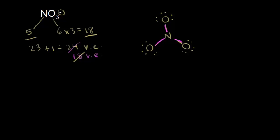Oxygen has an octet, so oxygen is happy. But nitrogen does not have an octet — there are only six electrons around the nitrogen, and so the nitrogen wants to get to an octet. There are a couple different ways we could give nitrogen an octet. For example, we could take a lone pair of electrons from the top oxygen and move them in to share those electrons between that top oxygen and the nitrogen. Let's go ahead and draw the resulting dot structure.